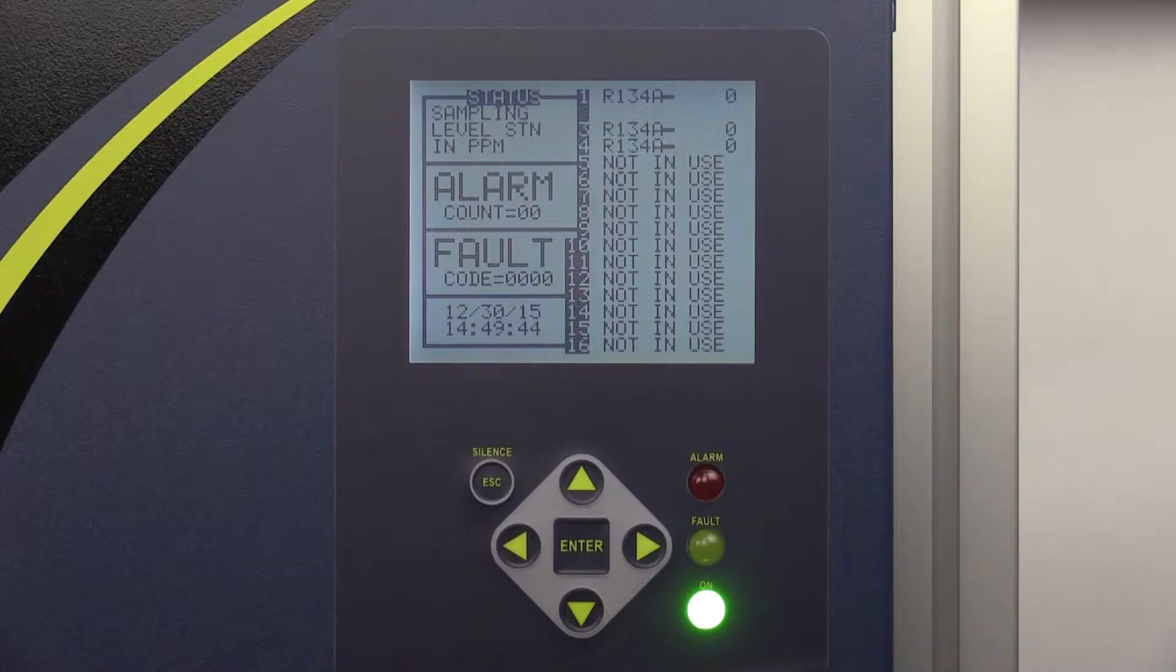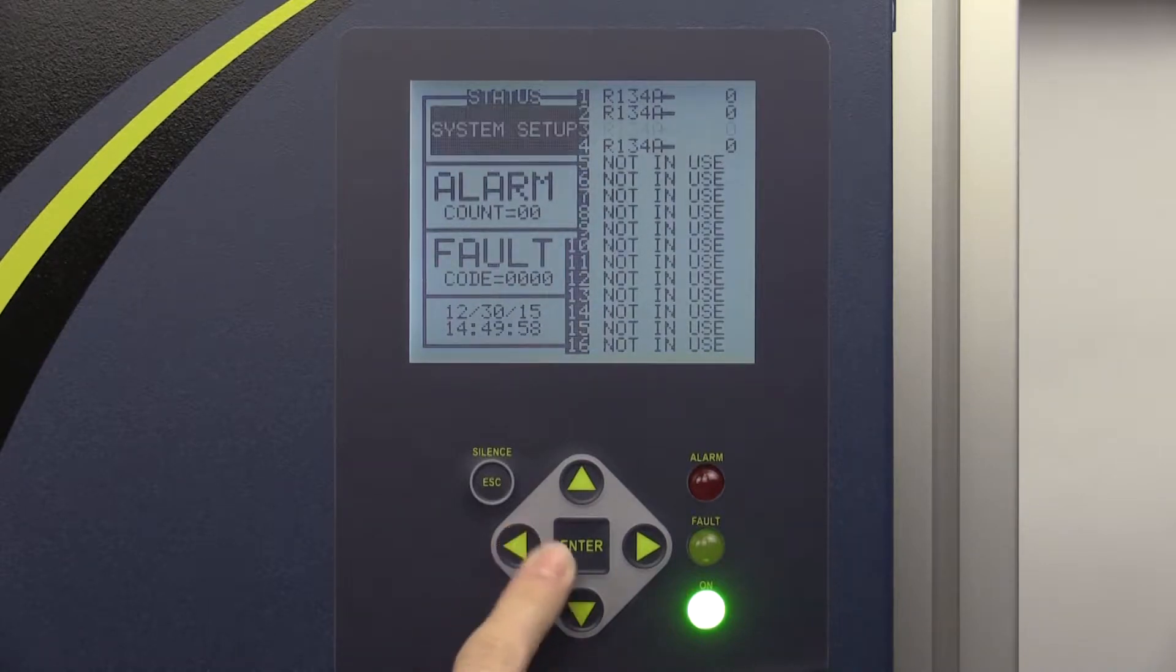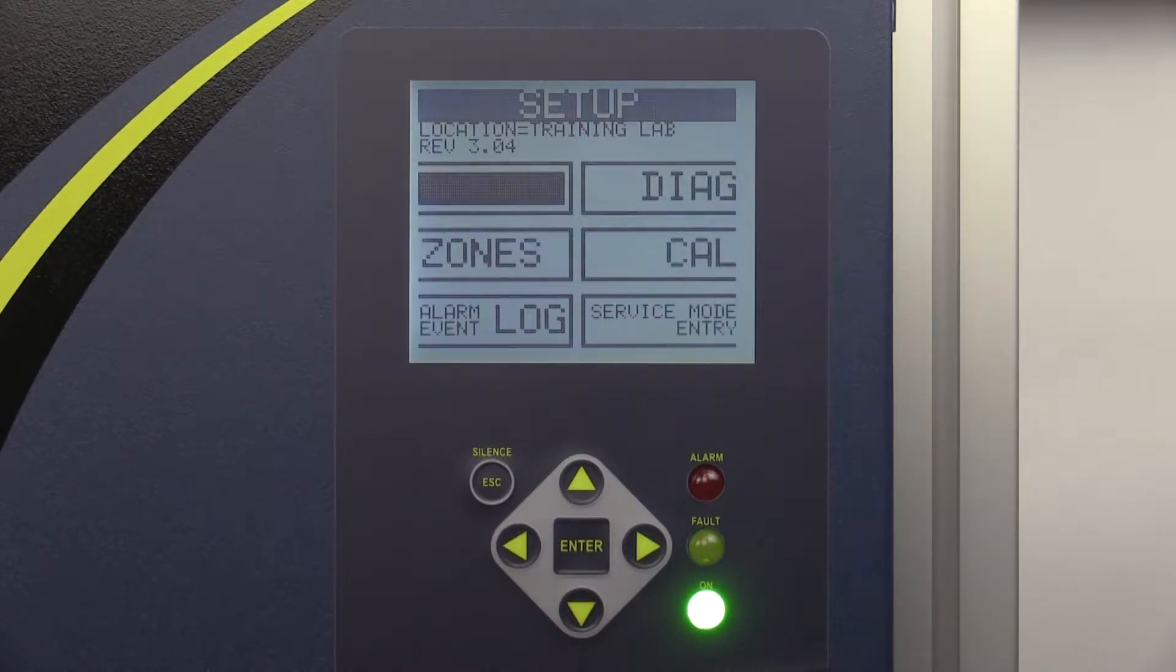After the warm-up cycle, the green on light will glow steadily and the monitor will display the data display screen. Now we will navigate to the first setup screen. To navigate to the first setup screen, use the keypad to highlight the status box and press enter.